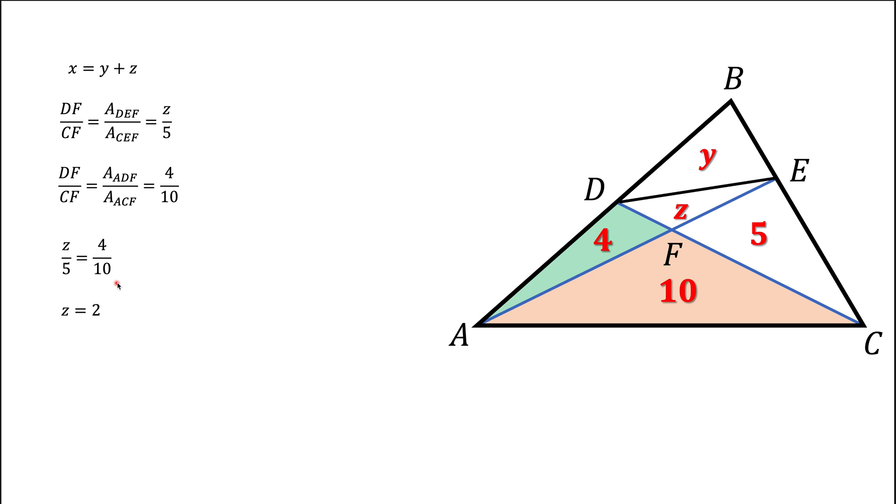Now I found Z. Now we want to find Y. First, let's consider this blue triangle and this pink triangle. So the ratio of the areas will be the ratio of the sides BE and CE.